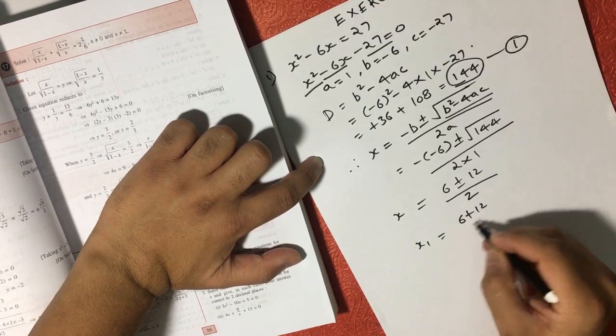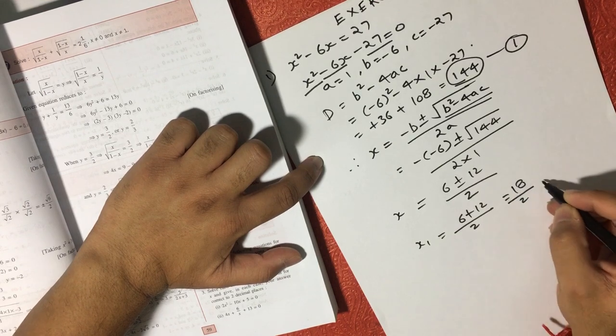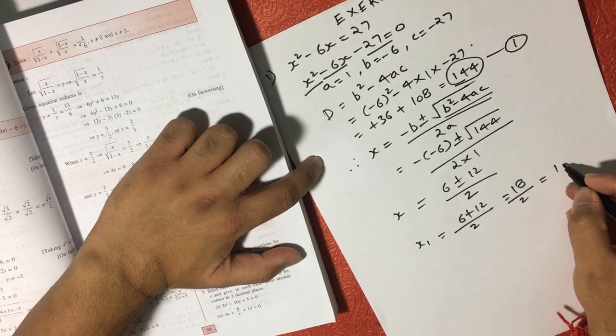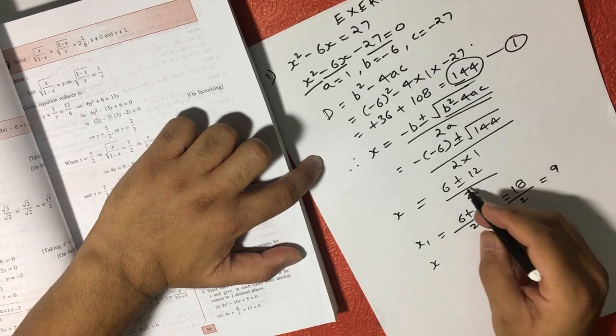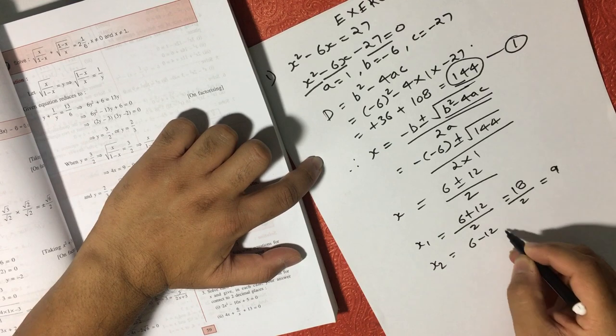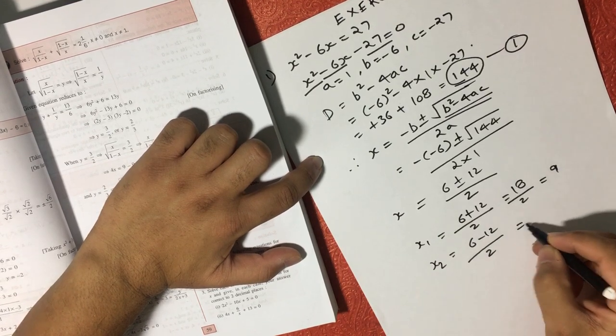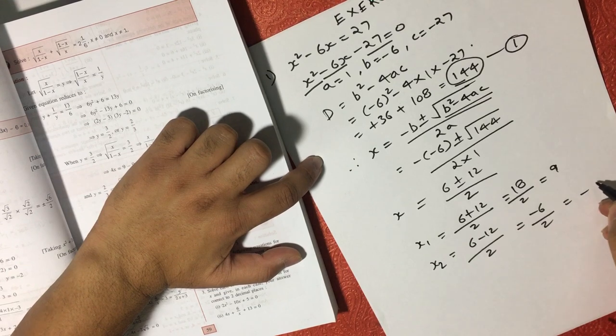6 plus 12 over 2 is equal to 18 by 2, so one value is coming as 9. And if we consider the negative part, then x2 is equal to 6 minus 12 over 2.